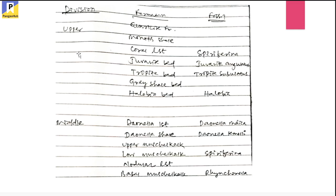Next is the upper Triassic of Spiti. These are different rock formations in the upper part of the Triassic of Spiti, along with different characteristic fossil assemblages in the upper Spiti region. We have to remember these successions with their important fossil names.